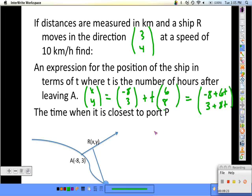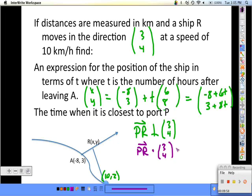The ship is going to be closest to point P, which was at (10, 2) down here, when PR is perpendicular to this direction vector of (3, 4), which means that PR and (3, 4) need to have a dot product equal to 0.